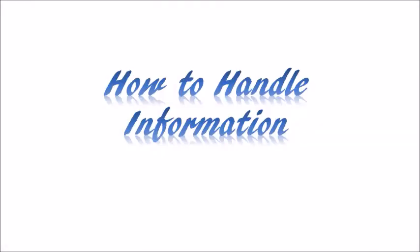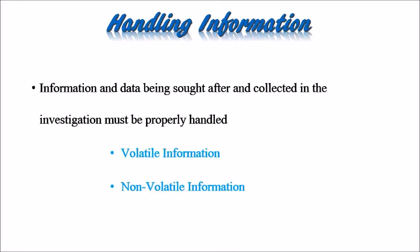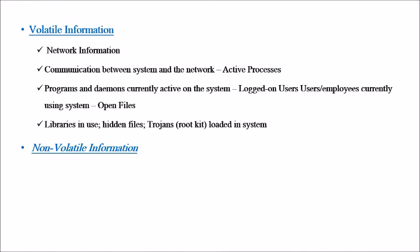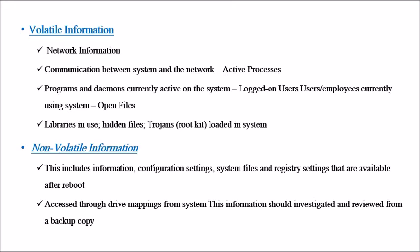This information will be handled in two ways: volatile information and non-volatile information. Volatile information includes network communications between the system and the network, active processes, programs and demands currently active on the system — such as logged-on users currently using the system — open files in libraries, hidden files, and trojans loaded in the system. Non-volatile information includes configuration settings, system files, and registry settings available after reboot, accessed through drive mapping from the systems.